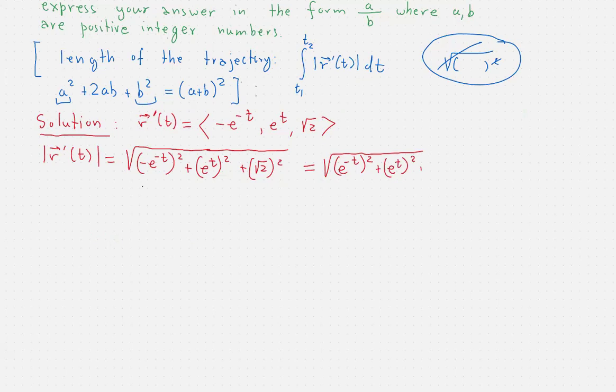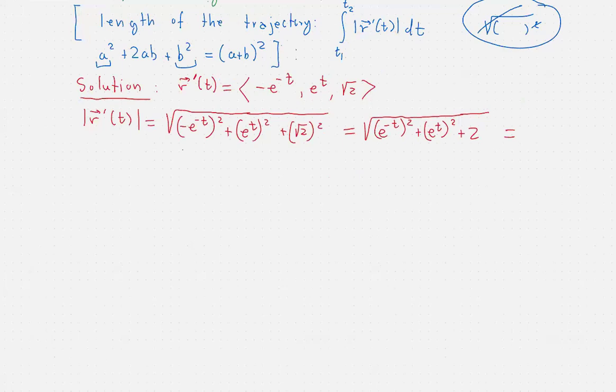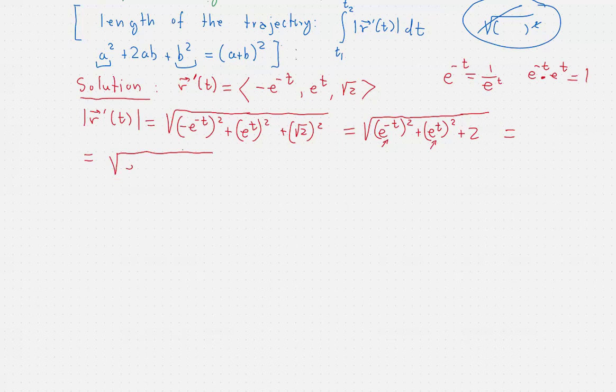So once we have done that, then it might not be that implausible to see that the number 2 can be written differently as 2 times the product of what we have here, of e^(-t) times e^t, because these two numbers are reciprocals of each other. So it's useful to remember that e^(-t) is 1/e^t, which means that e^(-t) times e^t is equal to 1.